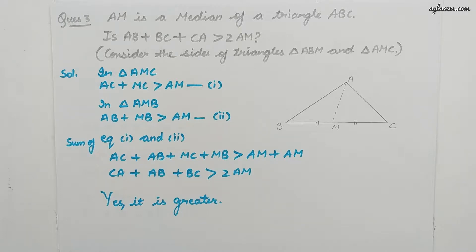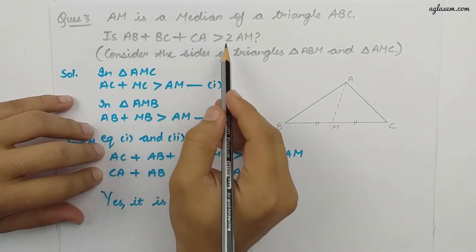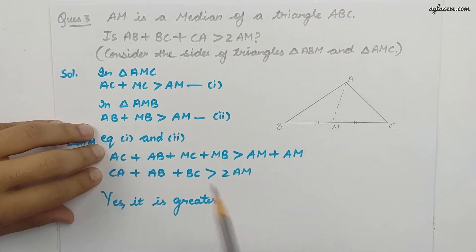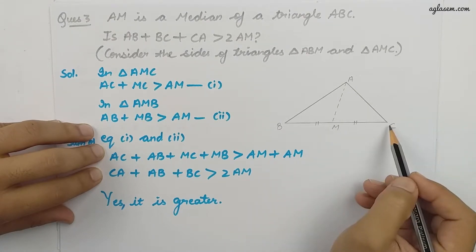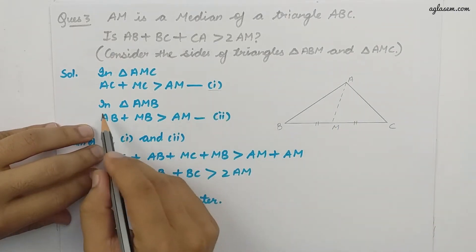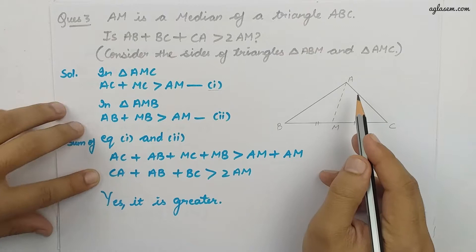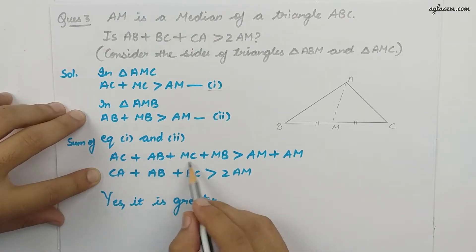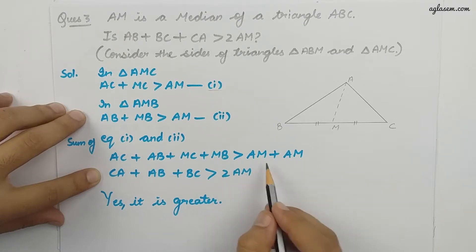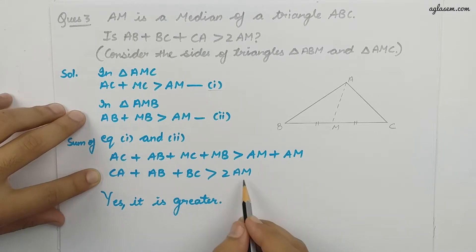The third question is: AM is a median of triangle ABC. Is AB plus BC plus CA greater than twice of AM? In triangle AMC, AC plus MC is greater than AM — that is the first equation. In triangle AMB, AB plus MB is greater than AM — that is the second equation. Adding both equations: AC plus AB plus MC plus MB is greater than 2AM. Since MC plus MB equals BC, we get AB plus BC plus CA greater than twice of AM.